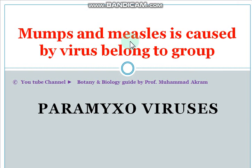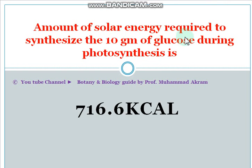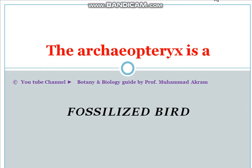Mumps and measles are caused by viruses belonging to the group Paramyxoviruses. The amount of solar energy required to synthesize 10 grams of glucose during photosynthesis is 716.6 kilocalories. Archaeopteryx is a fossilized bird.